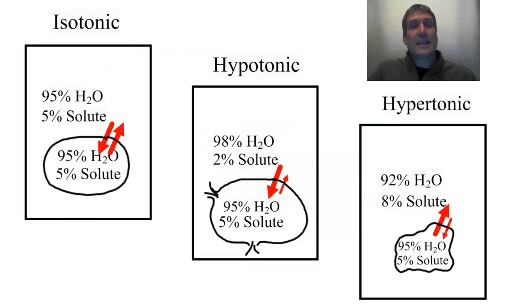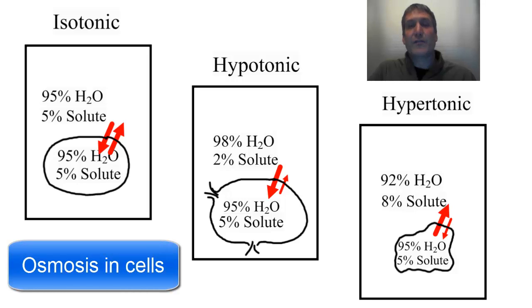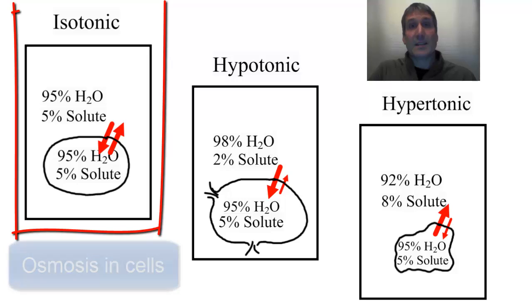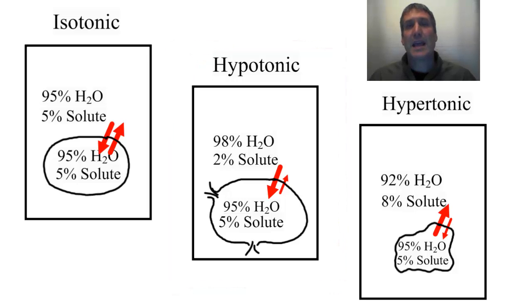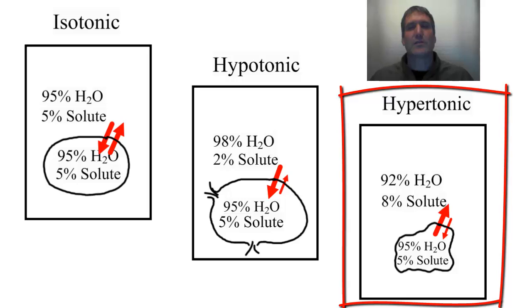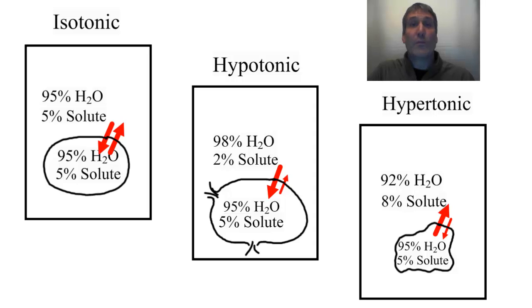Once you understand these three environments, you'll understand diffusion in cells. If it's an isotonic solution, there's no concentration gradient and no net movement of water. A hypotonic solution, water will diffuse out of the cell, causing the cell to shrink. I hope that was helpful.